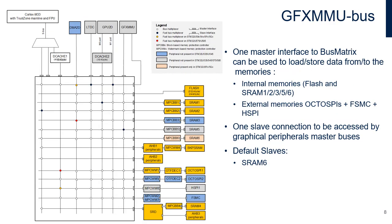This bus connects the GFX MMU master interface to the bus matrix, with a slave bus connection to be accessed by graphical peripheral master buses. The master bus is used to load and store data from and to the memories — internal flash memory, internal SRAMs (SRAM1, SRAM2, SRAM3, SRAM5 and SRAM6) and external memories through FSMC, HSPI1 or OctoSPIs. Its default slave is SRAM6.